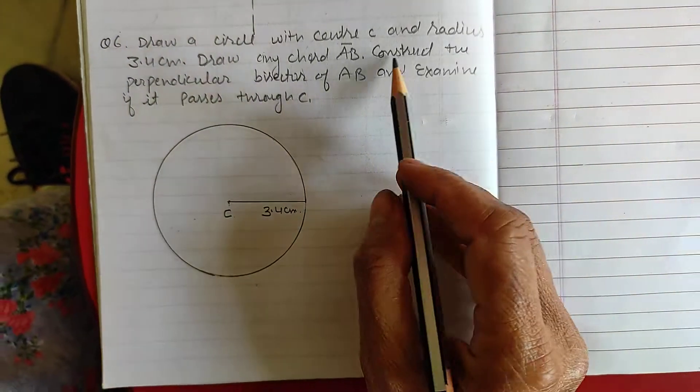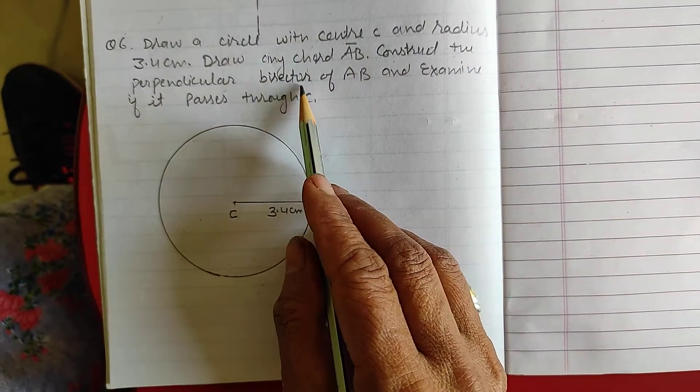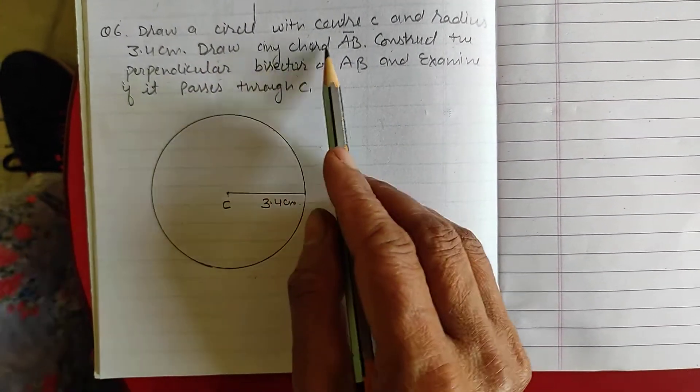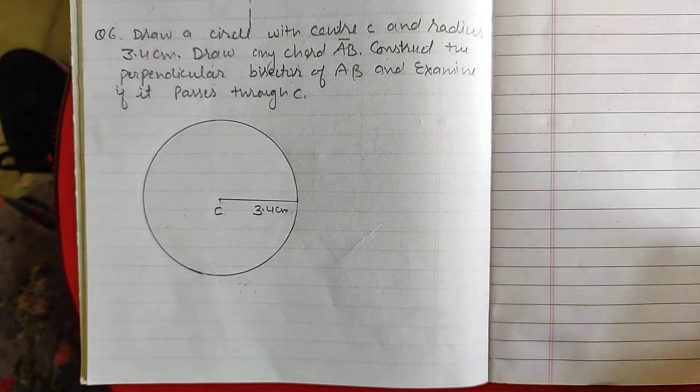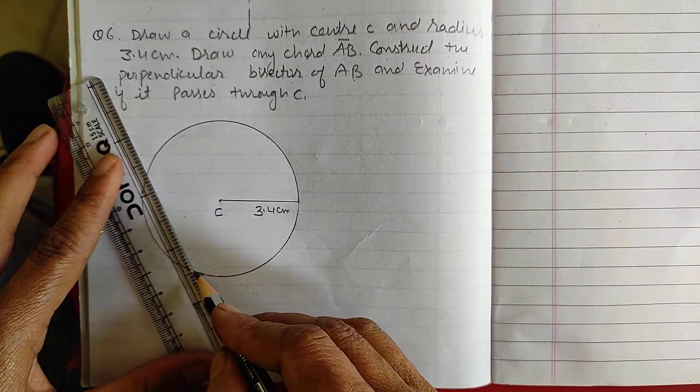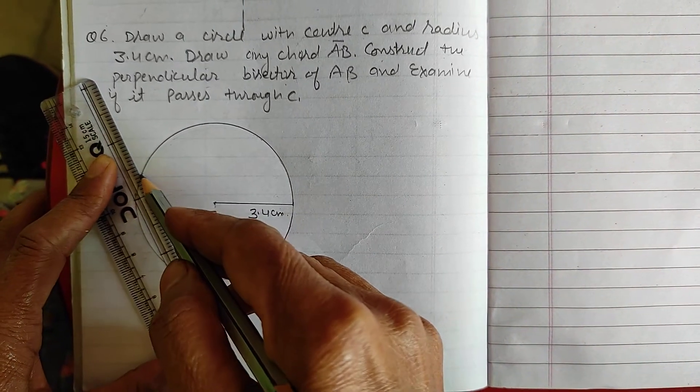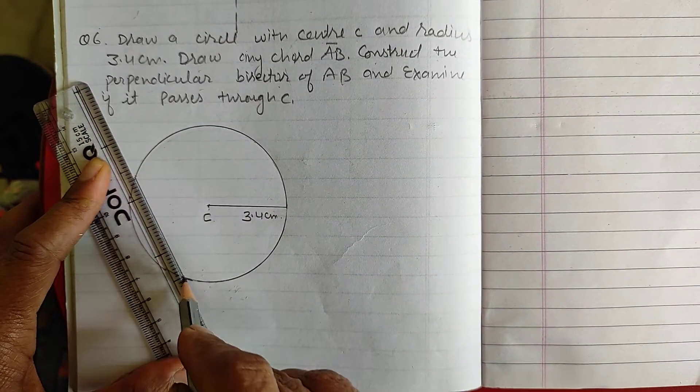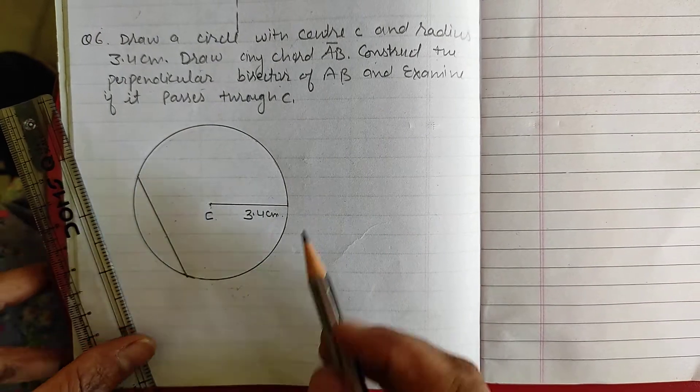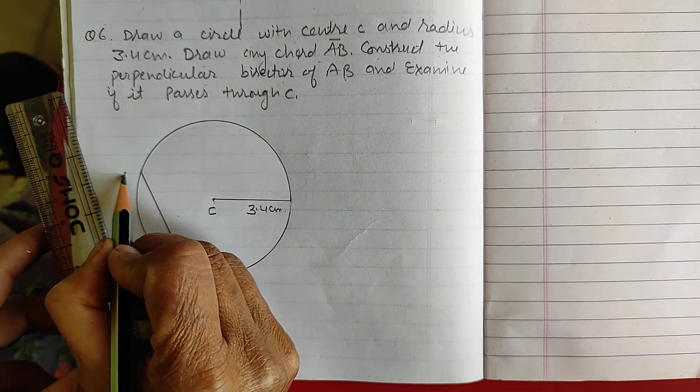Now, next is construct the perpendicular bisector of AB. Draw any chord AB. As you know, this is your chord. Chord means a line segment inside the circle. The name of this chord is AB.